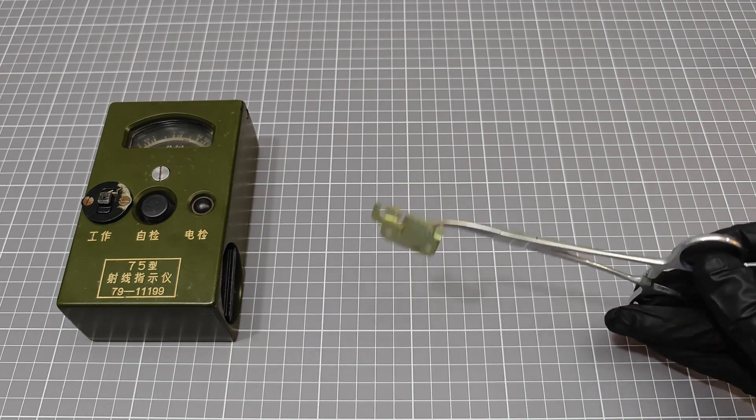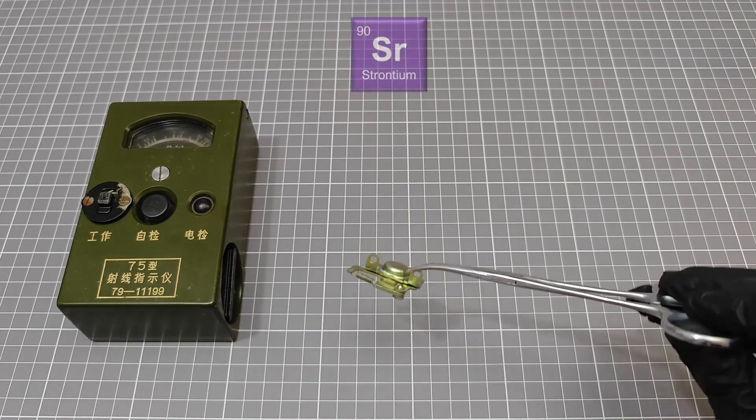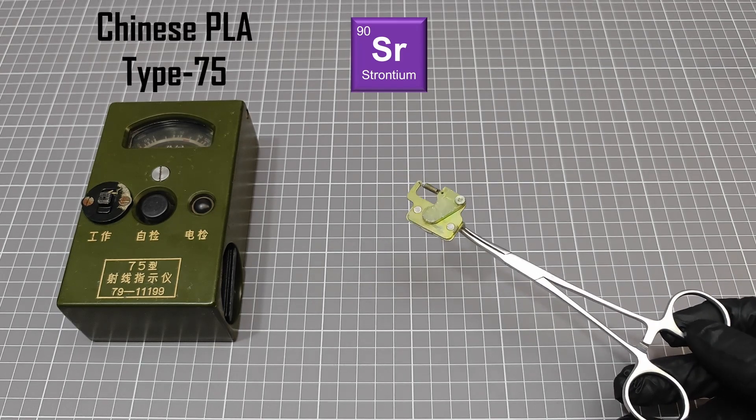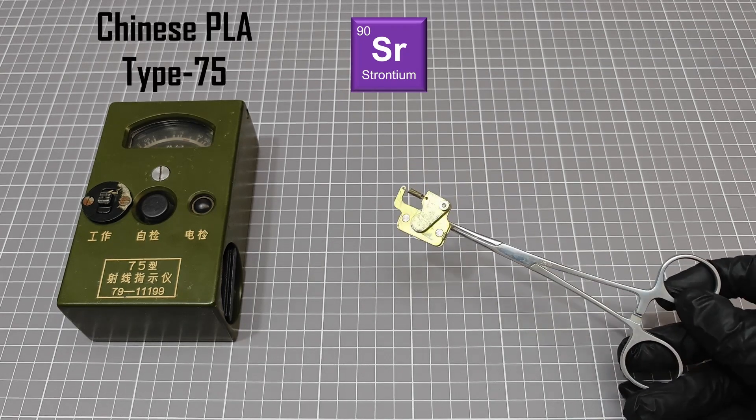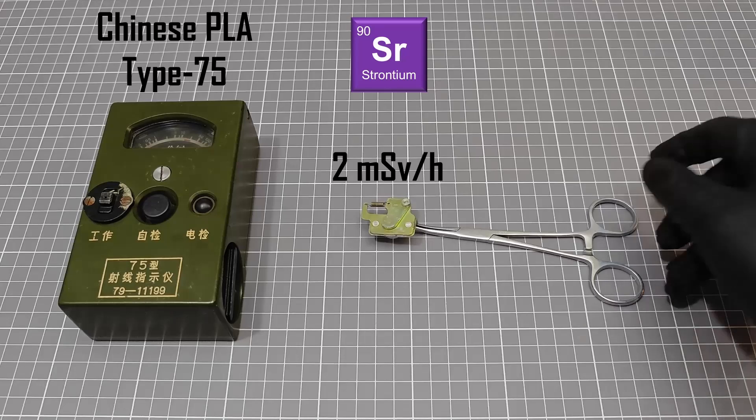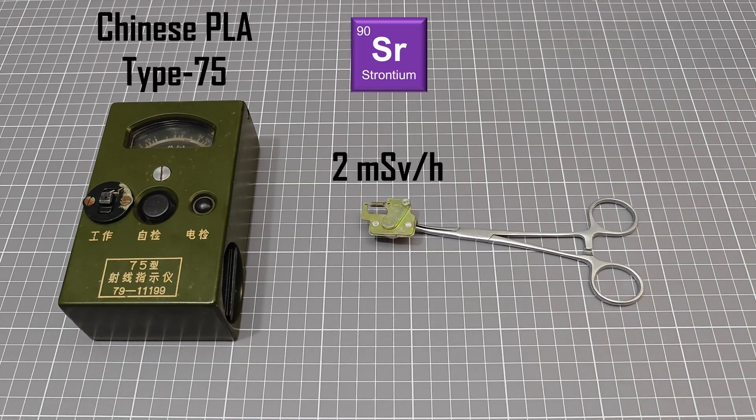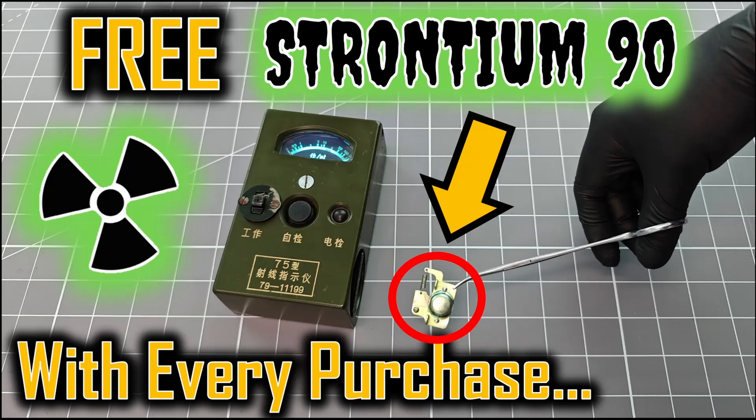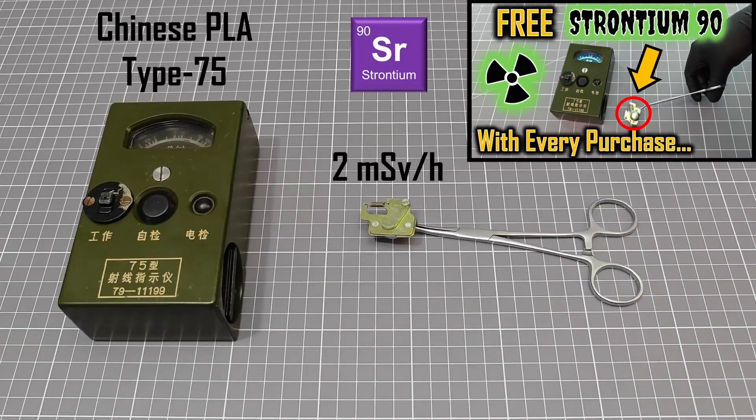For the source of beta particles, we have a strontium-90 check source which was taken from this vintage Geiger counter. It's quite a strong source of beta particles. It gives a dose rate of about 2 millisieverts per hour in direct contact with the detector. Again, we've made a video about this device which is linked below in the description.